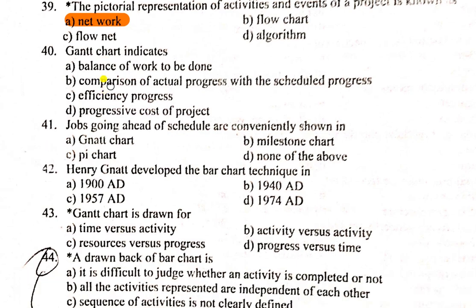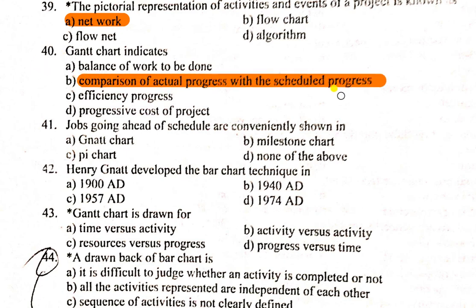Question number 14: Gantt chart is introduced for the balance of the work to be done, comparison of actual progress with the scheduled progress, efficiency of the progress, and progressive cost of the project. A Gantt chart is basically a bar chart from which we can determine how many days each task of a project will take. It is used to compare actual progress of work with the scheduled progress of work.